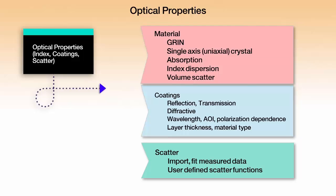With scatter — for now thinking mostly about surface scatter — we can import and fit measured data to some common scatter functions, and we can user-define scatter functions. We can also use tabular data for scatter. I would consider the first two approaches to be better when possible, but tabular data is also possible. It tends to slow things down a little bit compared to those two methods.